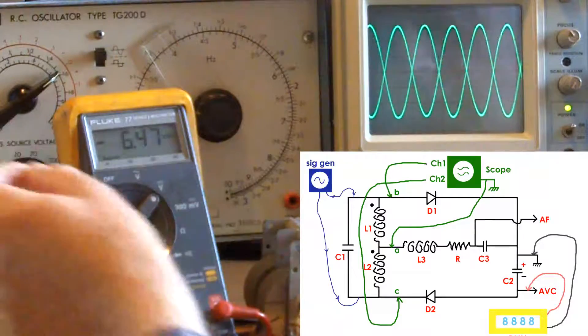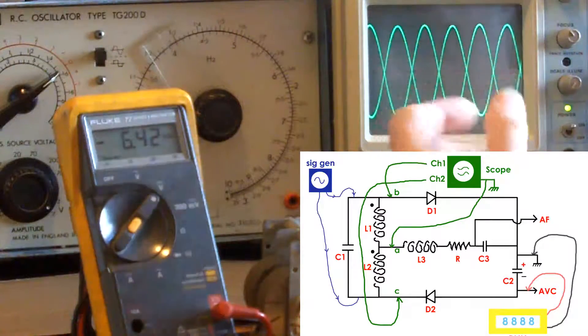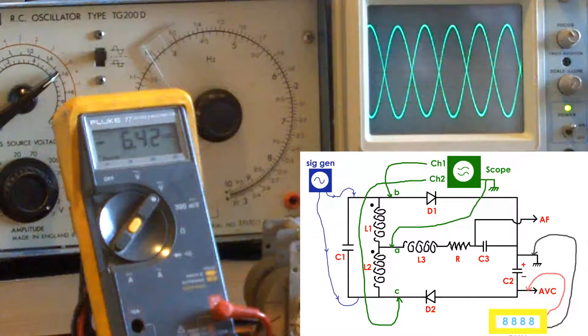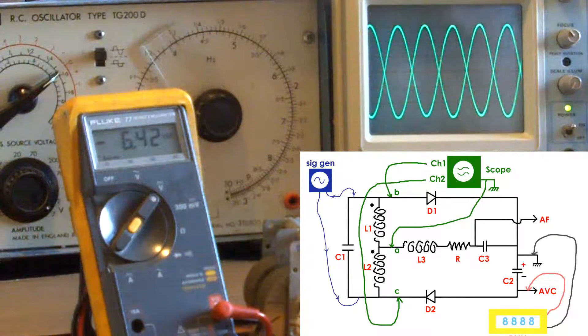And that effectively drives down the input stages. And it will try and maintain a constant level. It will maintain a constant level so long as it's got sufficient capability within the control loop. So that's the automatic volume control, the AVC.